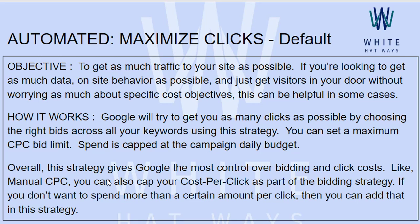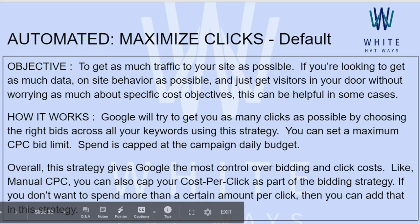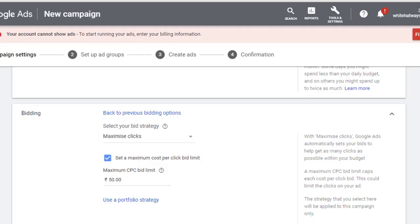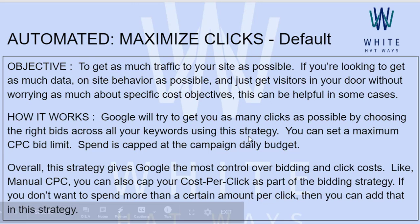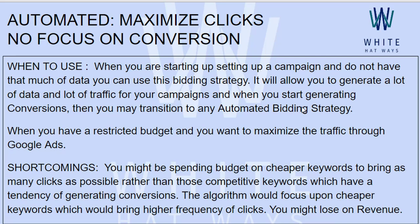If you don't want to cap your cost per click as part of the bidding strategy, you can leave it uncapped. However, if you don't want to spend more than a certain amount per click, then you can add that maximum cost per click bid limit in this bidding strategy.